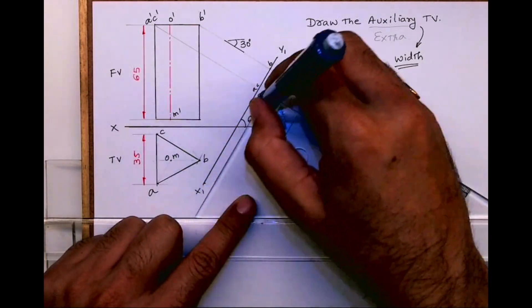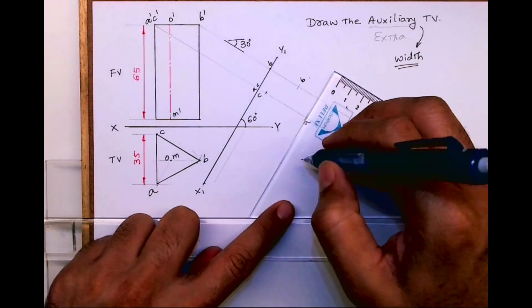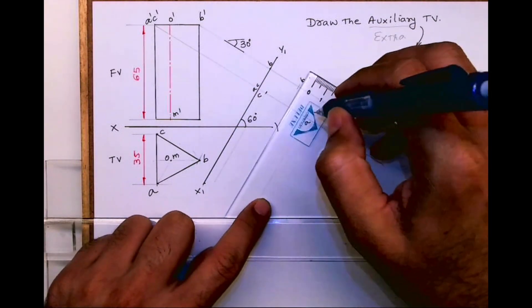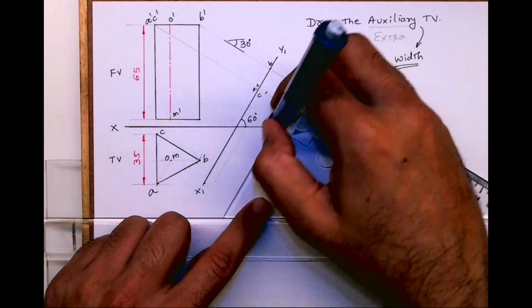Now see what I am doing. I am using one shortcut method where I am taking 60 degree line and I am projecting point A, B, and C downward.